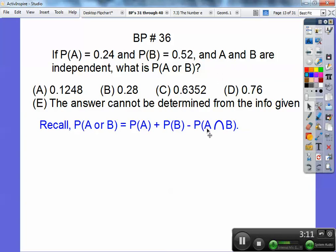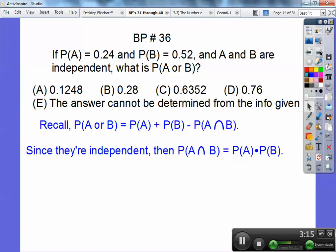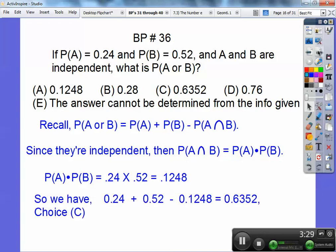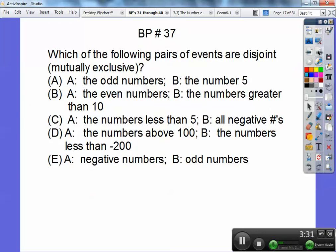So what we got to do is since they're independent, then we got to figure out what's the probability of A times B because that would be the intersection. So I'm going to go ahead and put 0.24 times 0.52. And that's the probability of A times B. And then we just add them up and subtract it. And I get choice C on that.